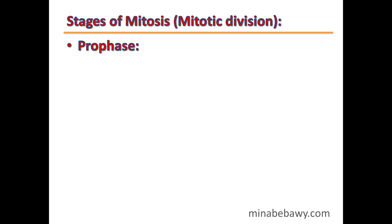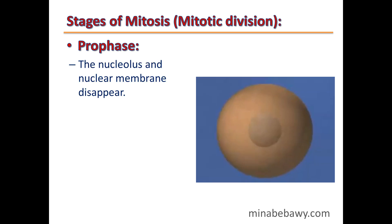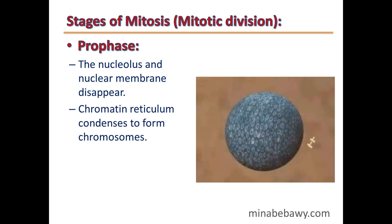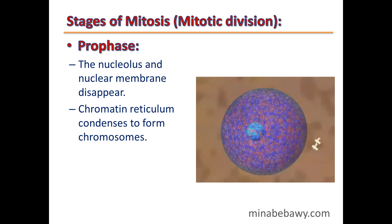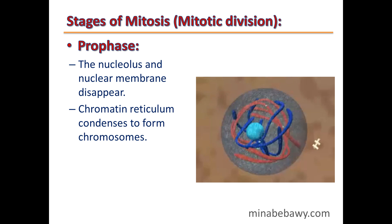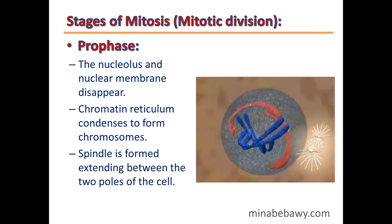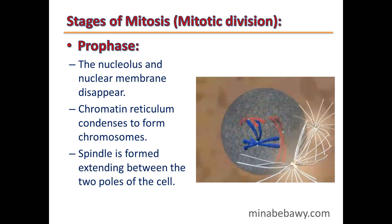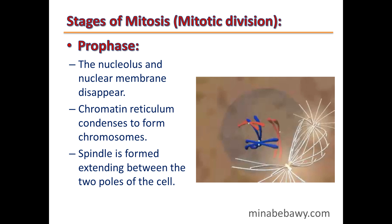In prophase, as you can see from this video, the nucleolus and nuclear membrane disappear. Then chromatin reticulum condenses and changes into solid form to produce chromosomes. Spindle fibers start to form, extending between the two poles of the cell, as you can see from this video.